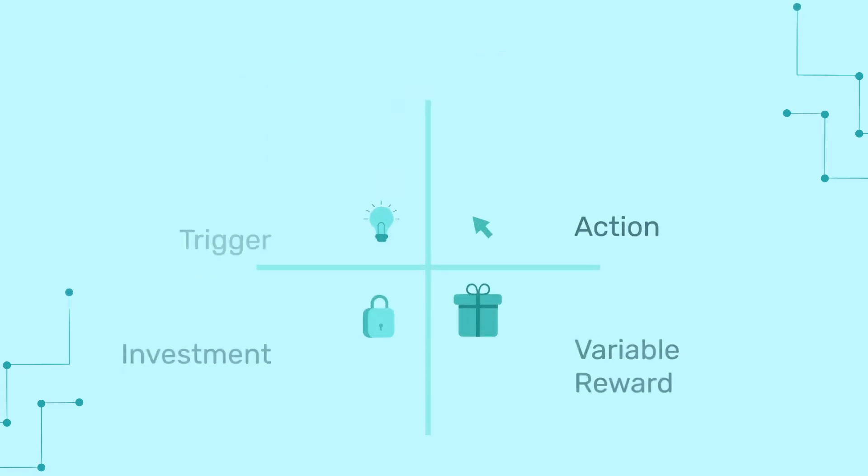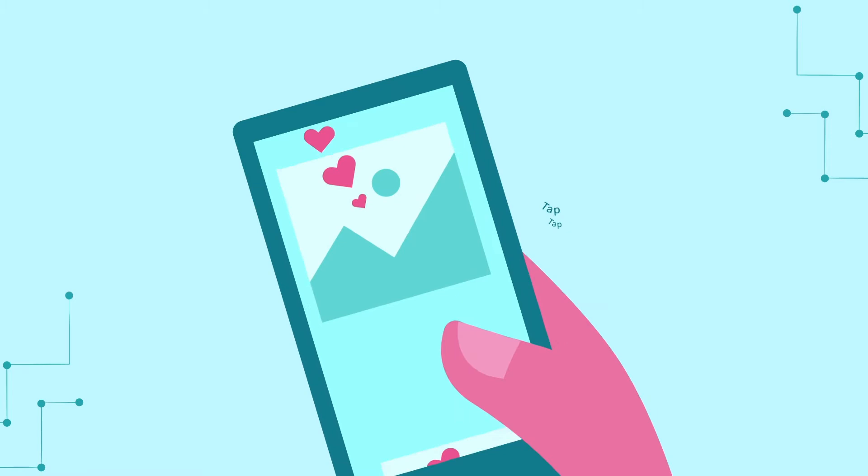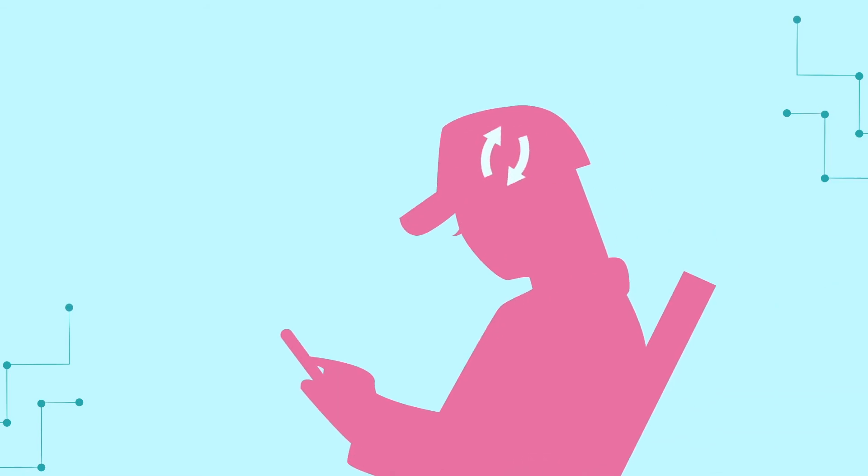In the tech space, a common external trigger is a notification that pops up on a user's phone. The trigger prompts them to use the product. The ultimate goal of an external trigger is to push users through successive cycles of the Hook Model until the user doesn't even need to experience an external trigger to perform the desired action anymore.